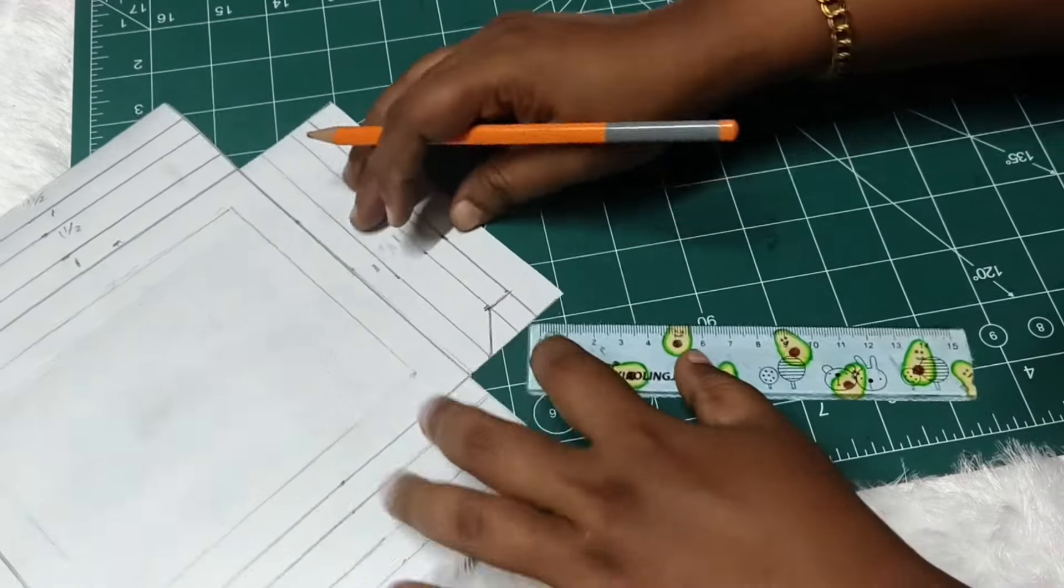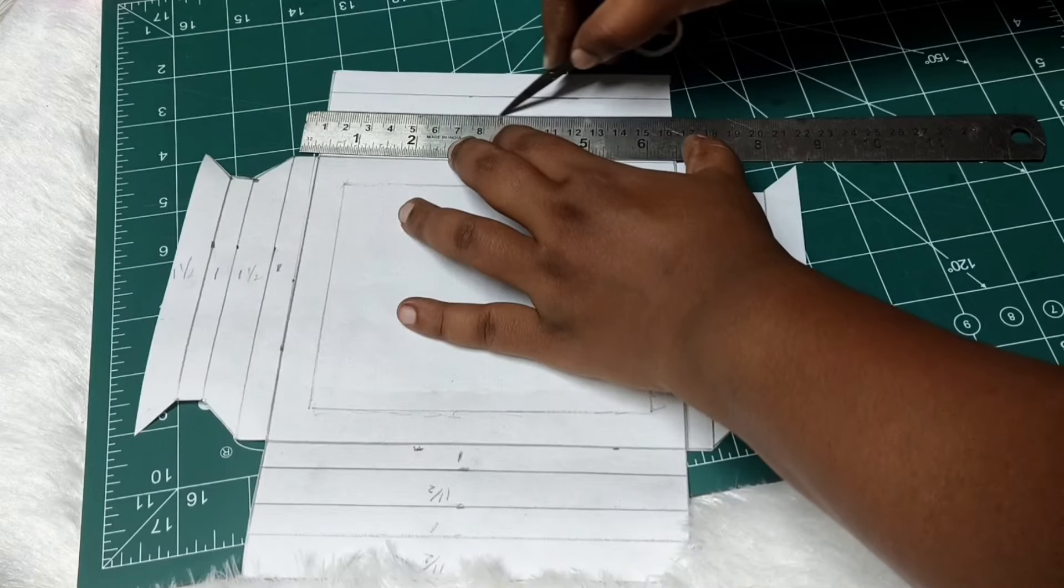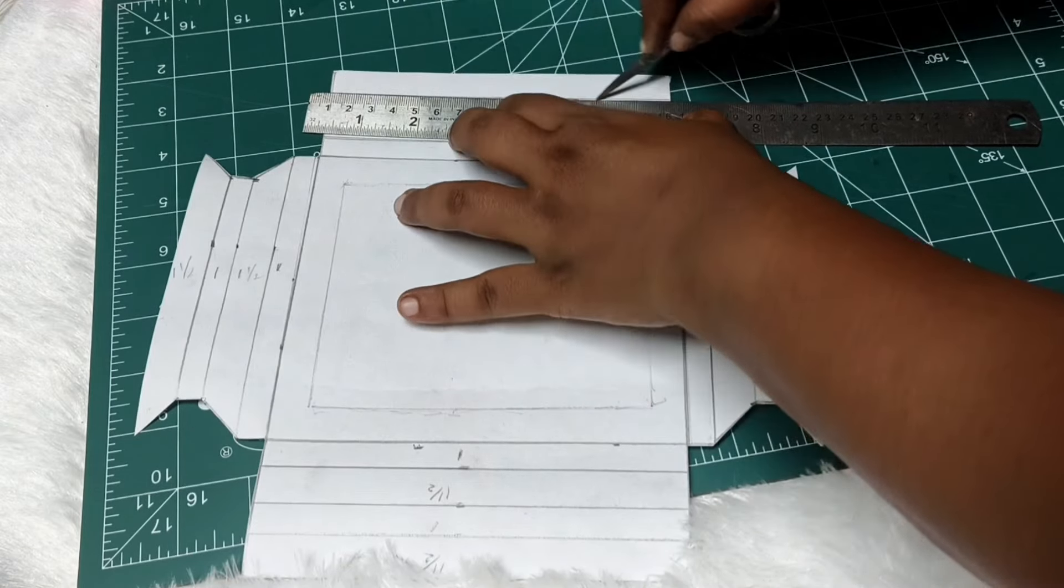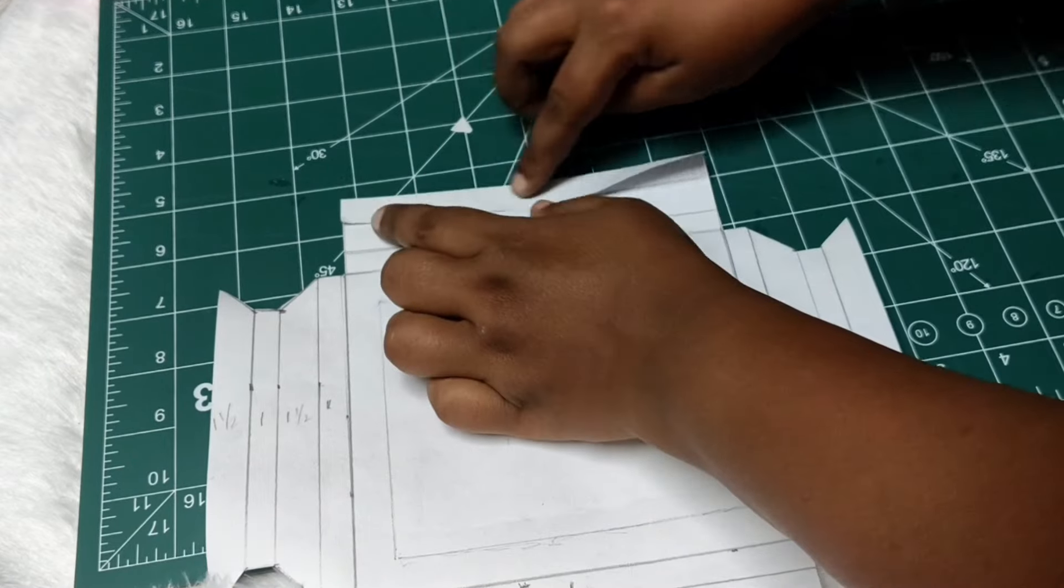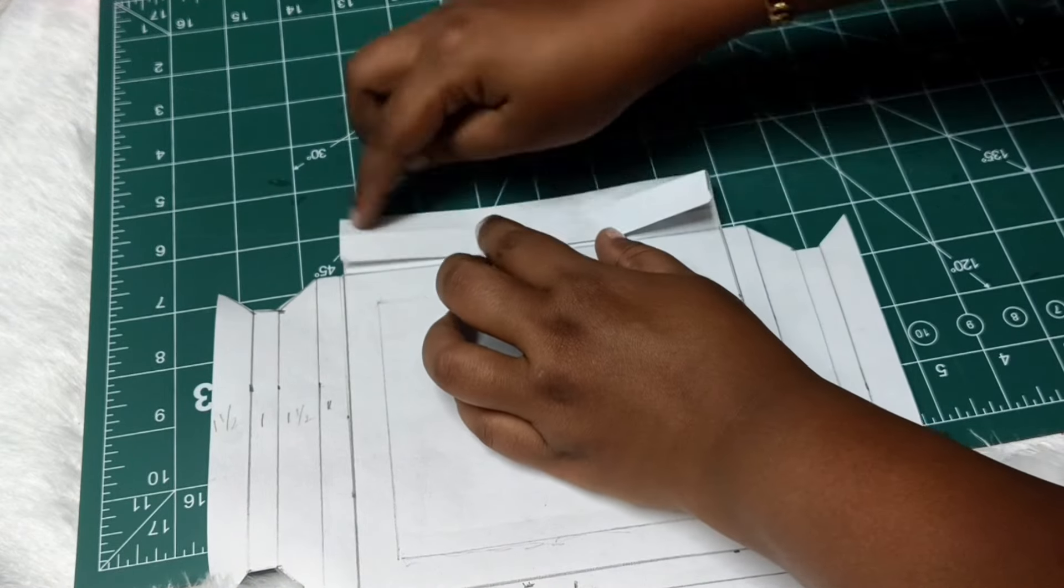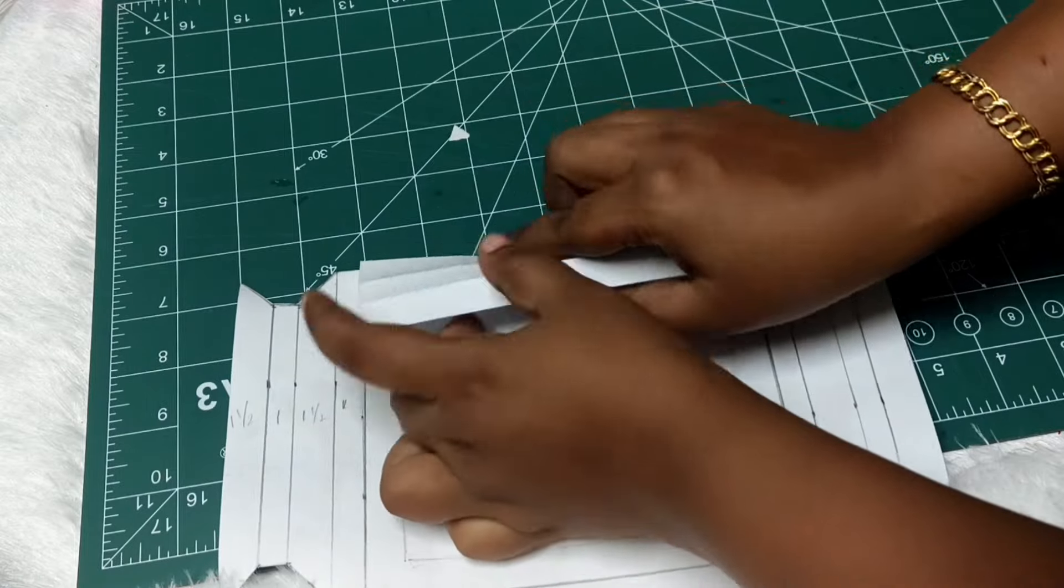You can do two sides of the card. You can do this. I will make a small piece. Then you can fold it.